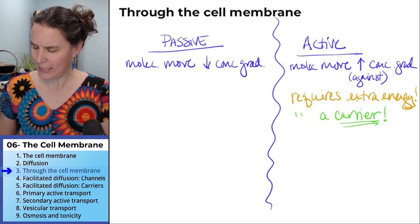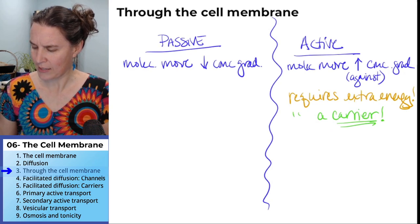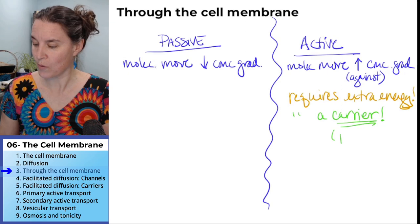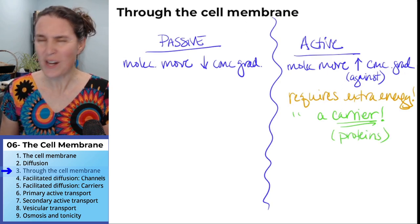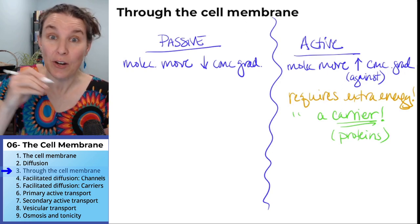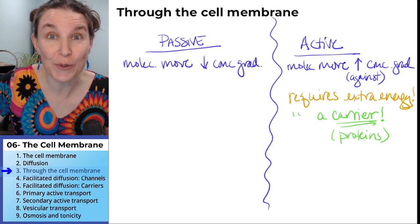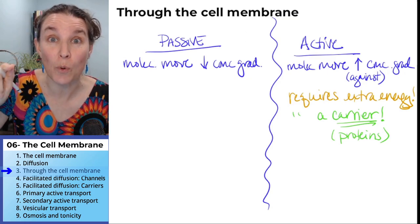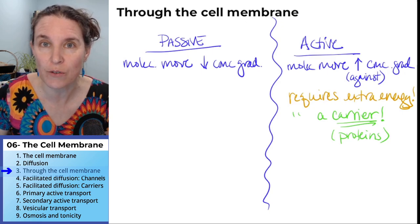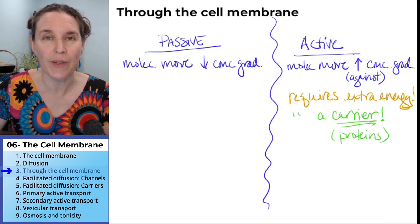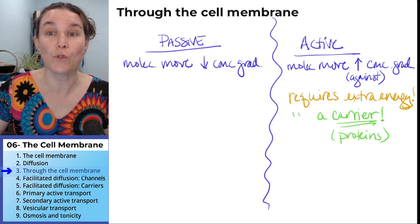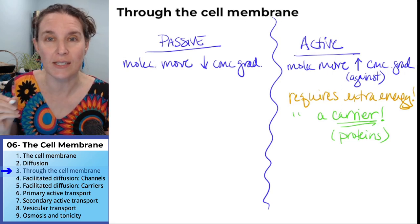Active transport is going to require extra energy, and it's also going to require a carrier. Carriers are proteins — protein machines that carry things through the cell membrane. If you're going to move something against a concentration gradient, you can't do that directly through the cell membrane. You need a machine to help you do that. That's what a carrier is.